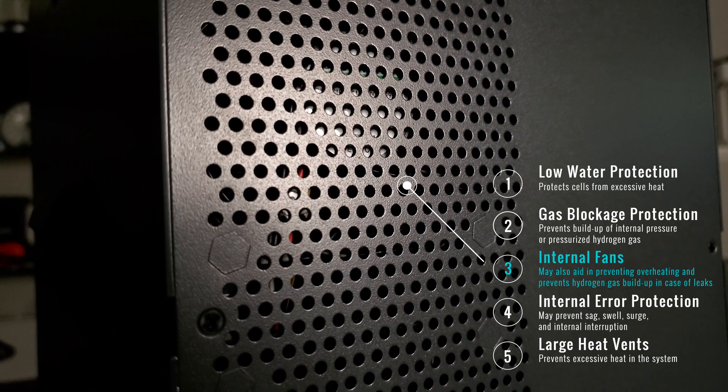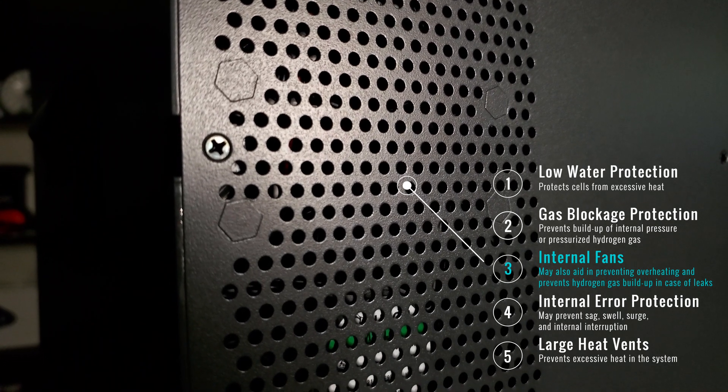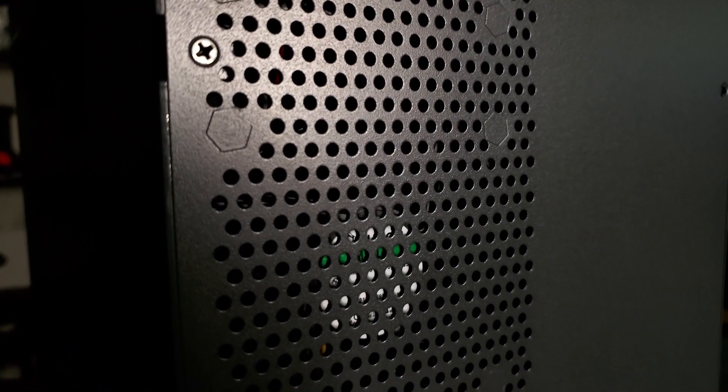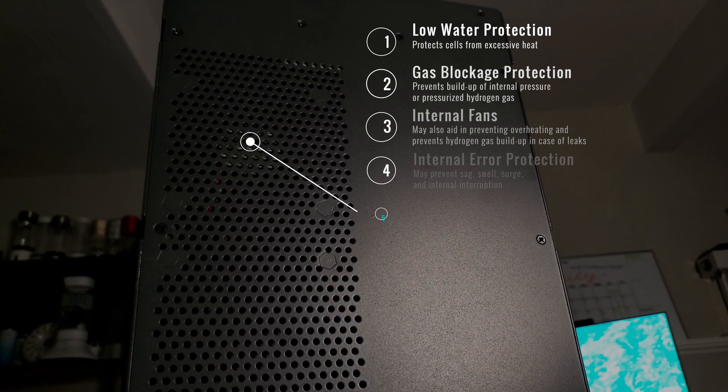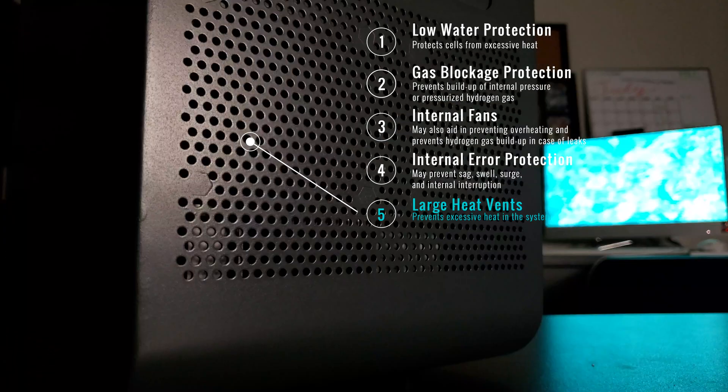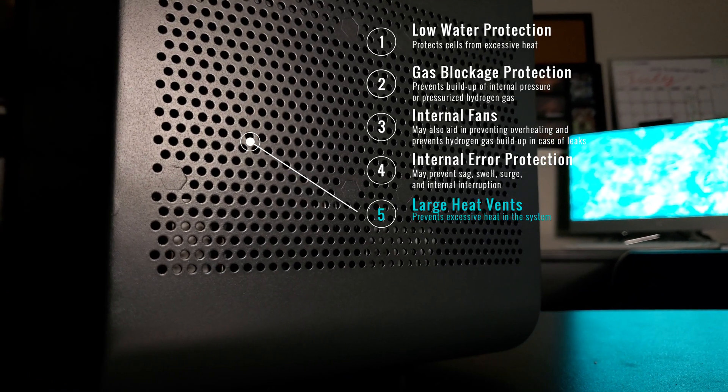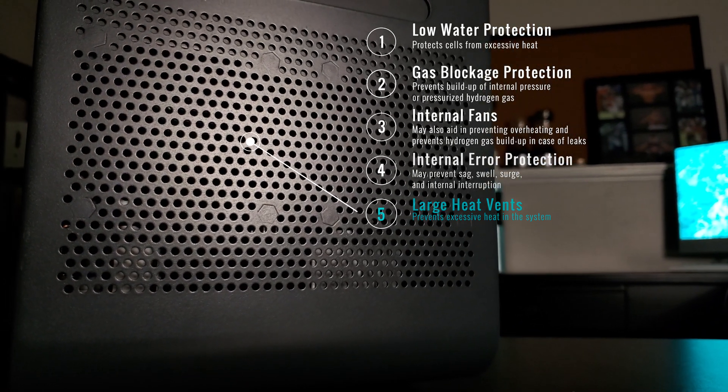Next will be internal fans. This system comes with several internal fans that prevents overheating and also prevents hydrogen gas from building up within the housing of the unit in case of a leak. The device also comes with power or internal abnormality protection. So if there is any internal interruptions the system will notify you and let you know that there is an error happening within the unit. This feature prevents the use of the device if there is a malfunctioning happening. Lastly, this device has large heat vents, one on the back side of the system as well as another on the front side of the system. These large heat vents prevents excessive heat of the system and also protects the device or the user from any kind of excessive damage.